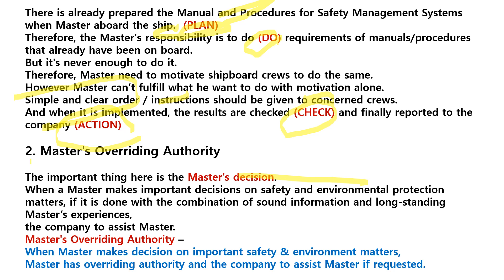Number two: Master's Overriding Authority. The important thing here is the master's decision. When a master makes an important decision on safety and environmental protection matters, if it is done with a combination of sound information and long-standing master's experience, the company should assist the master. Simply stated: what is the master's overriding authority? When the master makes a decision on important safety and environmental matters, the master has overriding authority and the company should assist the master if requested.